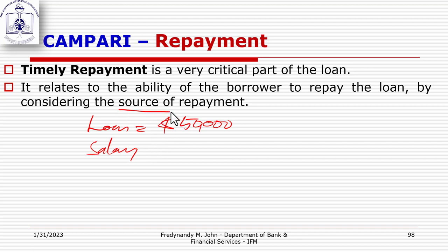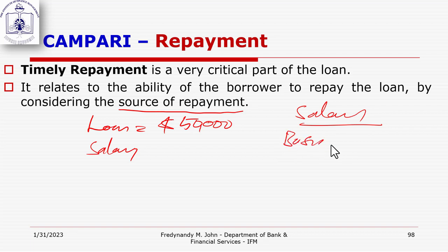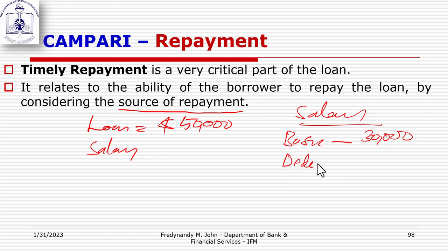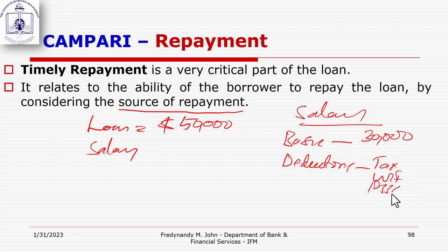The repayment structure can be amortizing — paying monthly throughout the loan term — or bullet, where no payments are made until maturity and then the entire principal plus accumulated interest is paid at once. Bullet repayment is very, very risky; that is why many banks prefer amortization. You can pay on a quarterly, semi-annual, annual, or monthly basis, but waiting until maturity to pay is extremely dangerous.